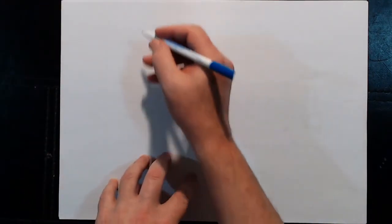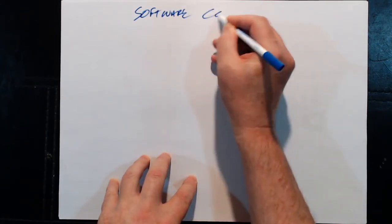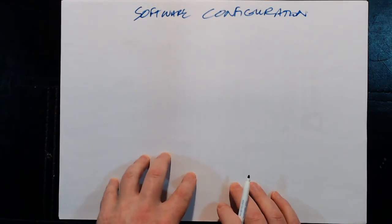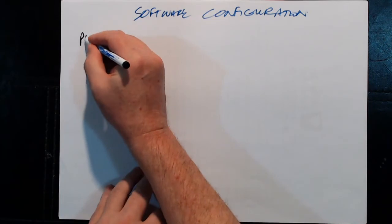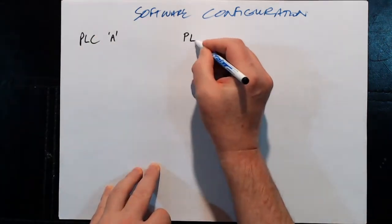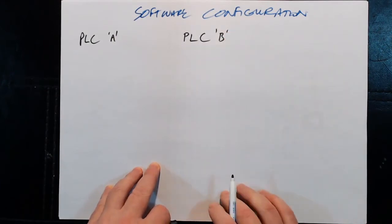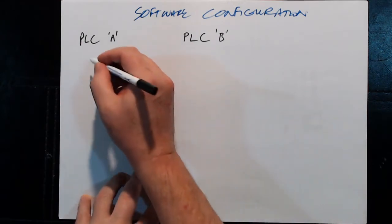Alright, so for the software configuration, we're going to be looking at the two different PLCs and seeing what goes in where. So we have two PLCs, PLC A and PLC B. And we'll see where these numbers come from in the following episodes when we discuss how we're going to set up this whole thing. Alright, so in each of these PLCs there's an OB1.